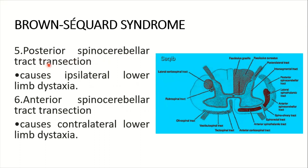Number five: posterior spinocerebellar tract transection. This is the posterior spinocerebellar tract. It causes ipsilateral lower limb dystaxia — a minor form of ataxia where limb movements are not coordinated and there is loss of coordinated movements. Number six: anterior spinocerebellar tract transection. It causes contralateral lower limb dystaxia. You can see the posterior spinocerebellar tract and the anterior spinocerebellar tract illustrated here.